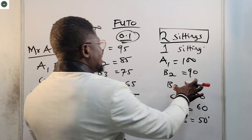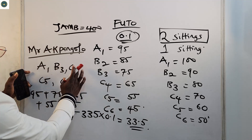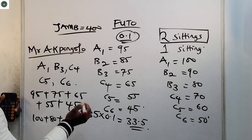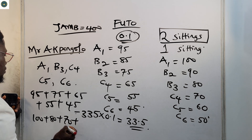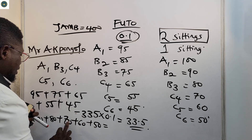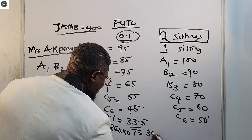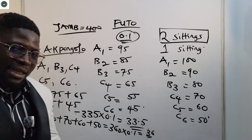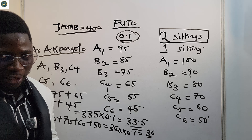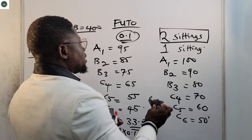If that same result were in one sitting, the calculation would be: 100 + 80 + 70 + 60 + 50 = 360. Multiplying 360 by 0.1 gives 36. So the difference between two sittings and one sitting is 33.5 versus 36 — having your result in one sitting gives you an advantage and can give you an edge.